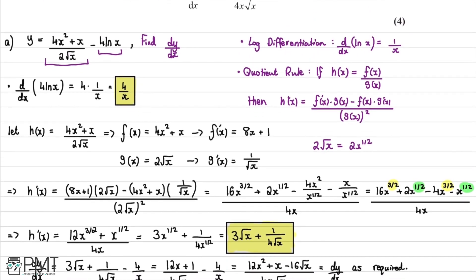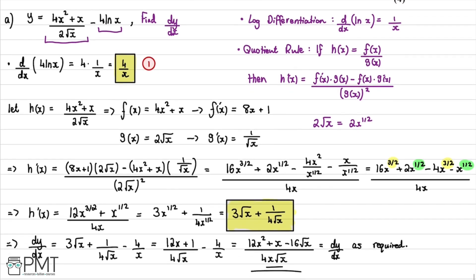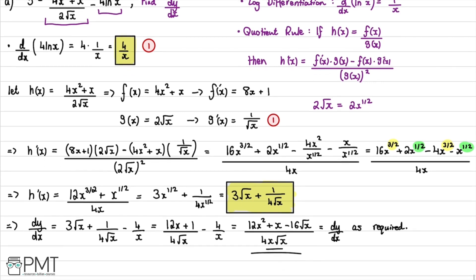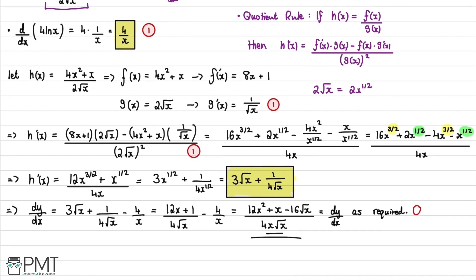This confirms the result as required. The four marks: one for correctly differentiating the ln term to get 4/x, one for selecting and applying the quotient rule method, one for making correct progress through the quotient rule, and one for the correct final answer dy/dx = (12x² + x − 16√x)/(4x·√x).